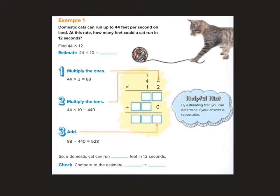Okay, so let's read our second example here. It says domestic cats can run up to 44 feet per second on land. At this rate, how many feet could a cat run in 12 seconds? In one second they can run 44 feet, and so in 12 seconds we just know that needs to be a multiplying problem.